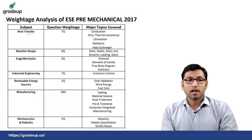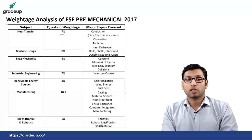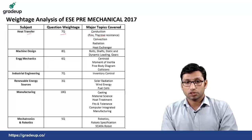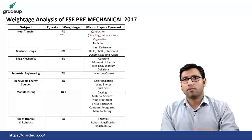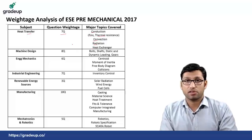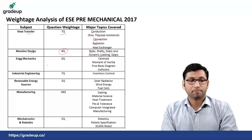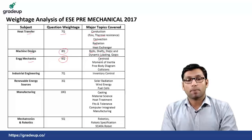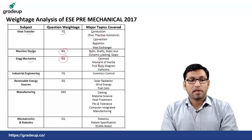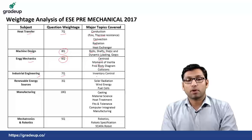From heat transfer there were total 7 questions from the topics of conduction — including fins and thermal resistance — from convection there were free and forced convection questions, from radiation and heat exchanger. From machine design there were totaled 8 questions from the topics of bolt, shaft, static and dynamic loading and gears. From engineering mechanics there were 6 questions from the topic of centroid, moment of inertia, free body diagram and collisions. From industrial engineering there were totaled 7 questions from inventory control.